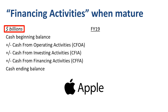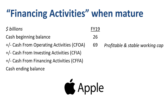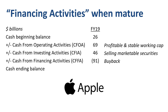Apple started their fiscal year 2019 with $26 billion in cash balance, generated $69 billion in cash inflow from operating activities as it is very profitable and its working capital balances don't change much, and generated $46 billion from investing activities, primarily through cash inflows from selling marketable securities, far exceeding the cash outflow from buying property, plant, and equipment. Apple could therefore afford to buy back shares, pay dividends to shareholders, and repay debt in the cash from financing activities section. After all of that, the company still had $50 billion of cash left at the end of the fiscal year.